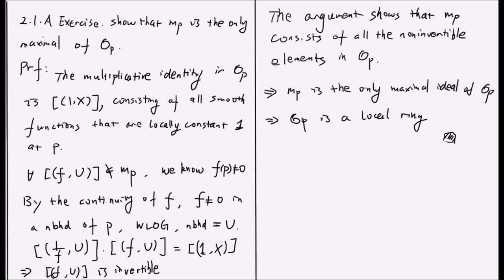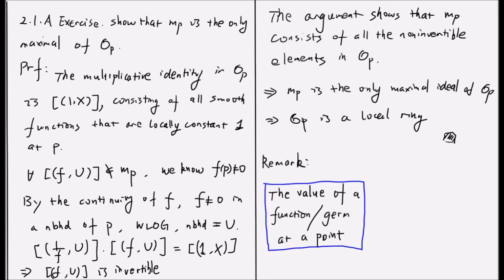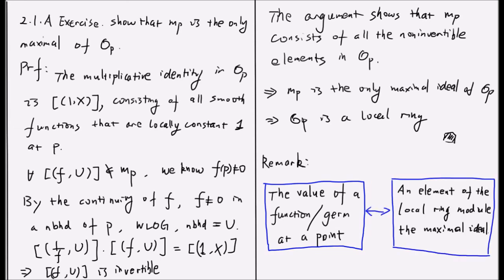From the discussion above, we see that we can identify the value of a function or a germ at a point with the element of the local ring modulo the maximal ideal. And this notion will be later formalized in the notion of a locally ringed space.